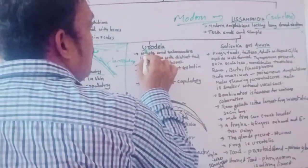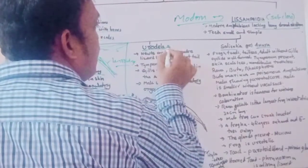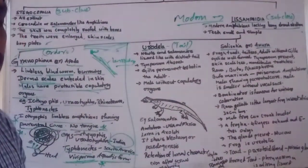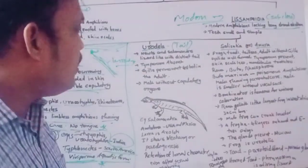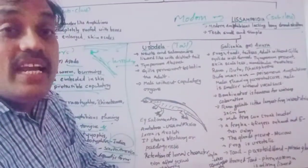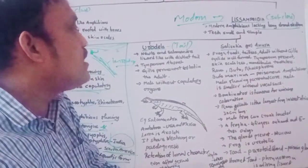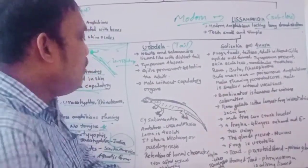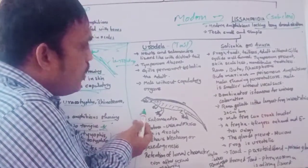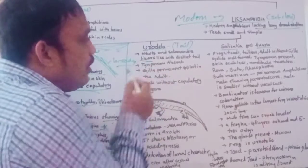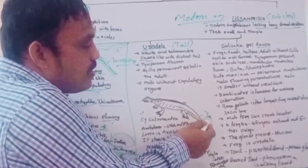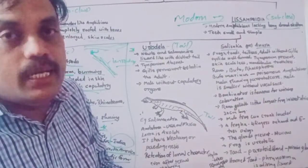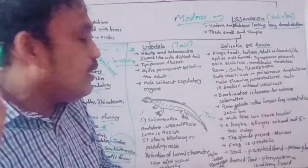The next order is Urodela. 'Uro' means tail — these organisms have a tail. Unlike frogs which do not have a tail, Urodela are tailed amphibians. Examples include newts and salamanders. If you observe the diagram, Salamandra looks like a lizard with a distinct tail.